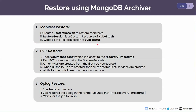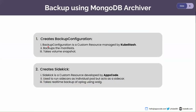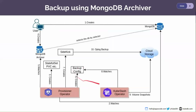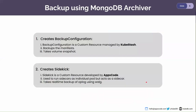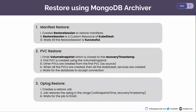We can use those authentication secret and config secret to bring up our database. When manifest restoration is completed, the operator goes to the second step, which is the PVC restore. KubeStash, using the backup configuration, takes snapshots periodically in cloud storage. There may be 10, 15, or even 100 volume snapshots, but we need only one snapshot to restore our database. Using the recovery timestamp, the operator finds the closest volume snapshot and uses it to create the first PVC of the database.